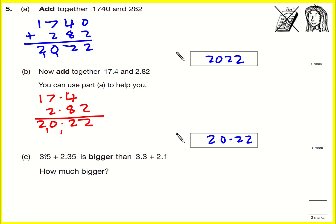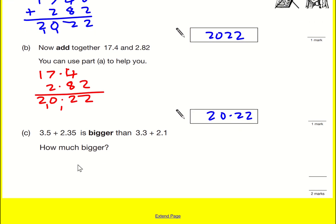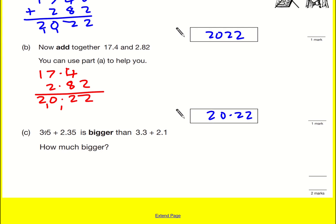We're then told that this is bigger than this, how much bigger? There's two ways you could do this. The first way is to notice the difference between 3.5 and 3.3, 3.5 is 0.2 bigger.